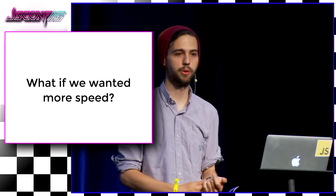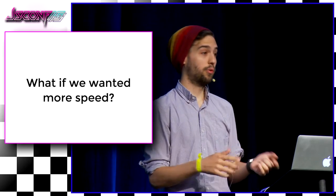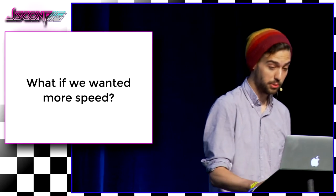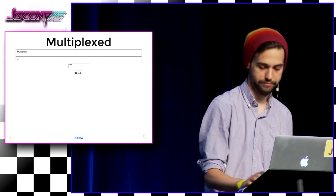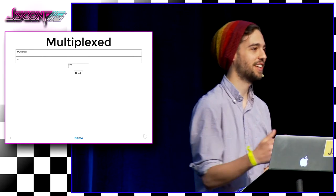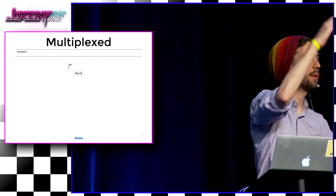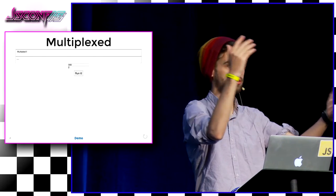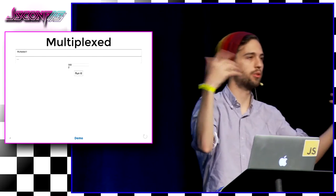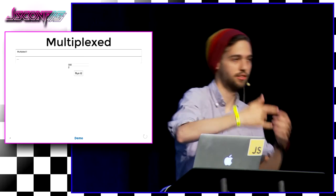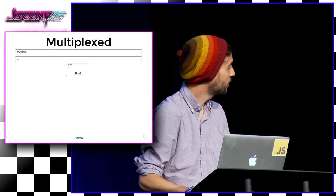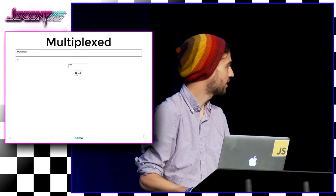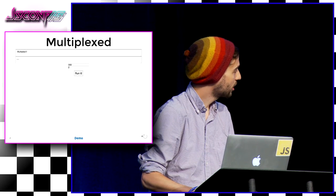We're at 300 baud now. It works pretty well. What if we wanted more speed? 300 baud is incredibly slow. Well, we can multiplex it. Multiplexing in our case means stacking the frequencies on top of each other — one high tone at 2200 Hz, another at 3000 Hz, and so on. At 300 baud with two multiplexers, we can go 600 baud.